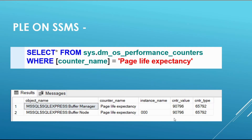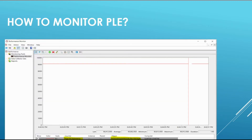Now let's check how we can find PLE on SQL Server Management Studio. The DMV to use is sys.dm_os_performance_counters. This DMV will give you the counter value — for example, 90,796 — which is the current PLE value.